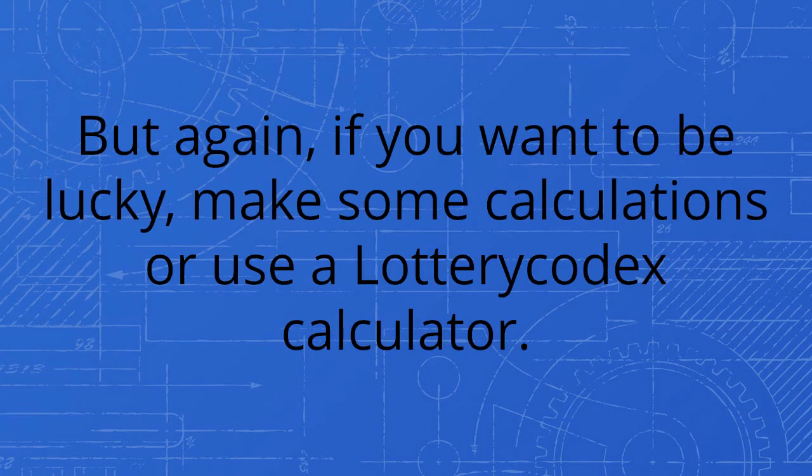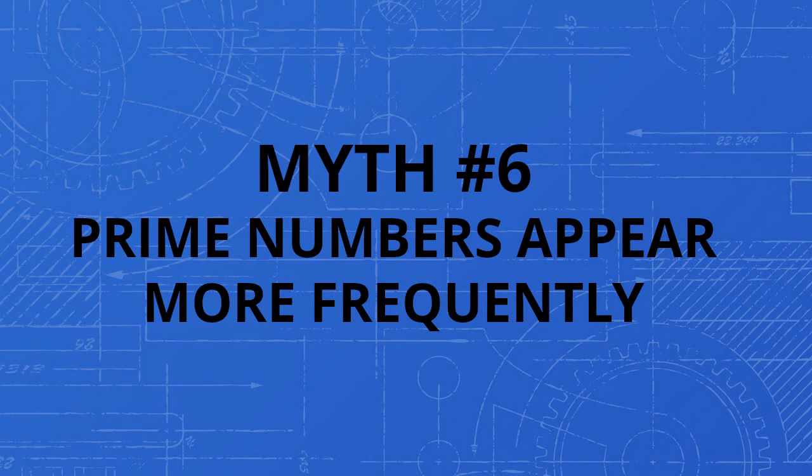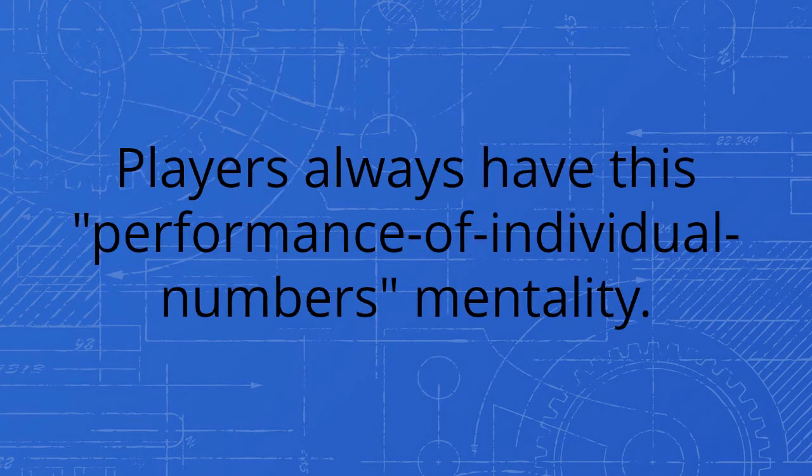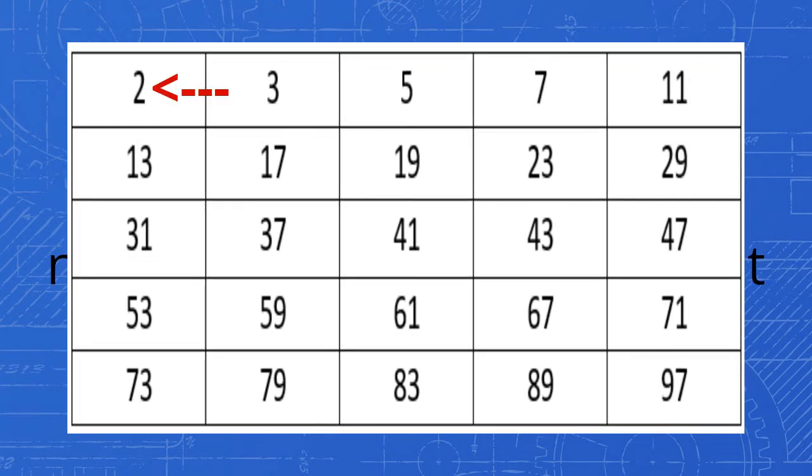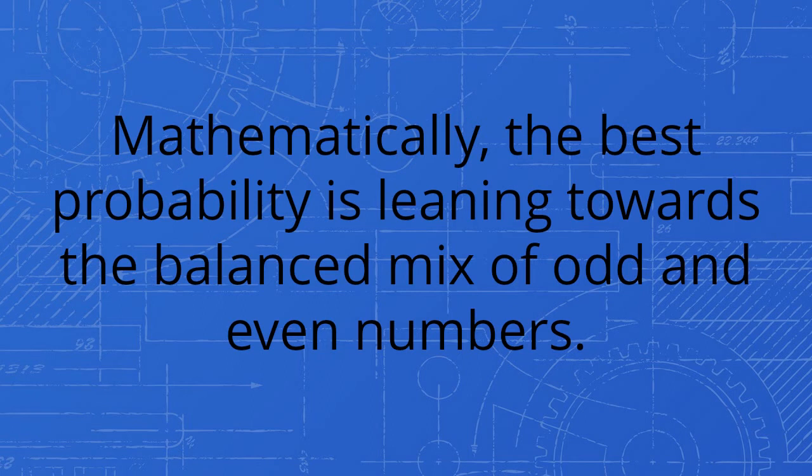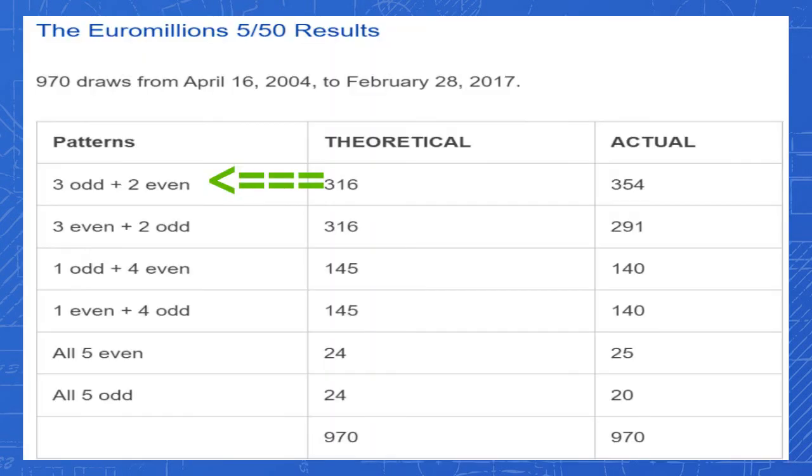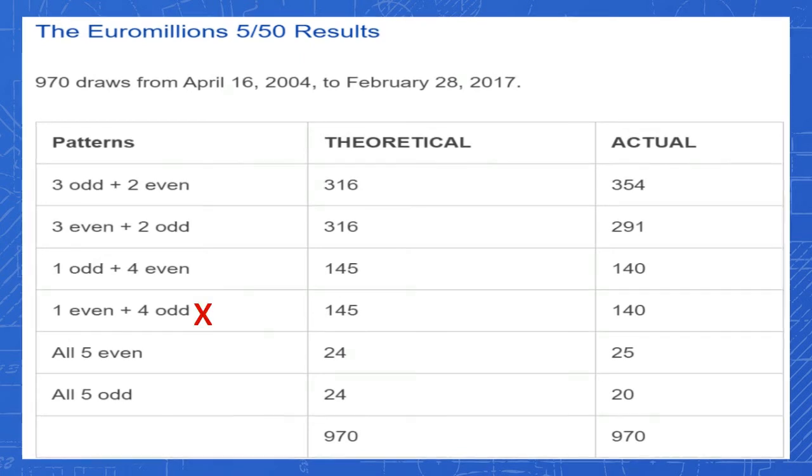Myth number six: prime numbers appear more frequently. Here is another case of making assumptions but failing to explain how things work from a mathematical perspective. Players always have this performance of individual numbers mentality. Here is the complete list of prime numbers used in the lottery. Did you notice that the number two is the only even number from the list and that the rest are odd numbers? Mathematically, the best probability is leaning towards the balanced mix of odd and even numbers. Therefore, playing an all odd number pattern is not recommended at all. The 970 draws of the EuroMillions 5/50 game from April 16, 2004 to February 28, 2017 show that the three odd two even pattern dominates the rest of the patterns. Clearly, playing all odd or using the one even four odd pattern is not recommended mathematically.